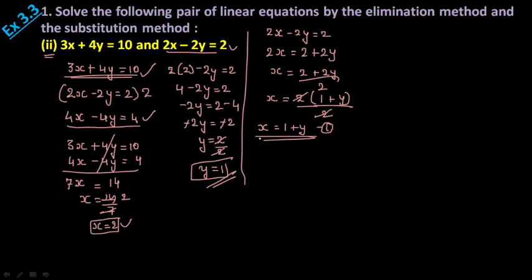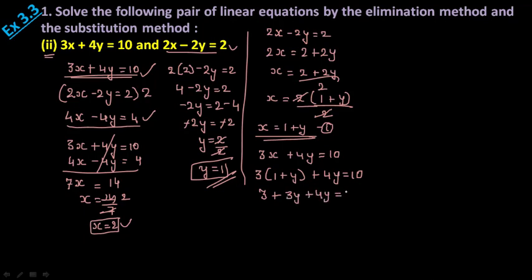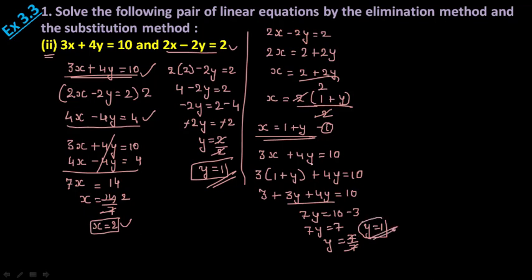Now keep this value of x in the first equation: 3x + 4y = 10. On the place of x put (1 + y): 3(1 + y) + 4y = 10, giving 3 + 3y + 4y = 10, so 7y = 10 - 3 = 7, and y = 1. Now keep y = 1 back in result 1: x = 1 + y = 1 + 1 = 2. So x = 2 and y = 1 by both methods.